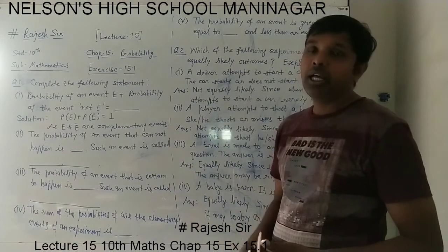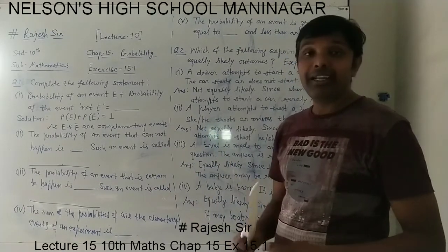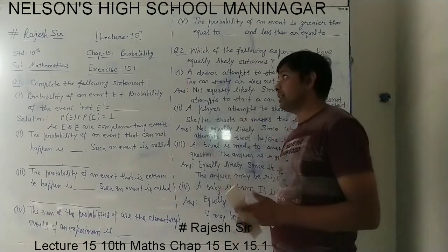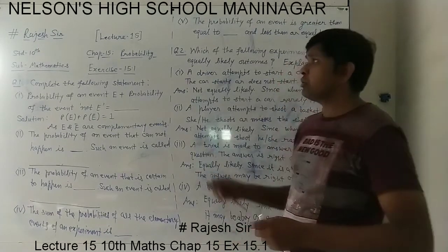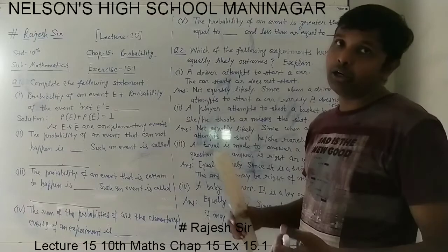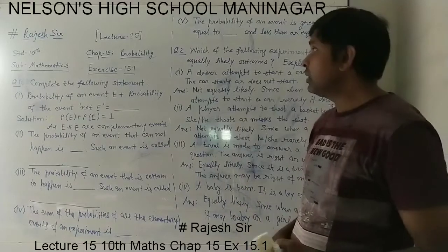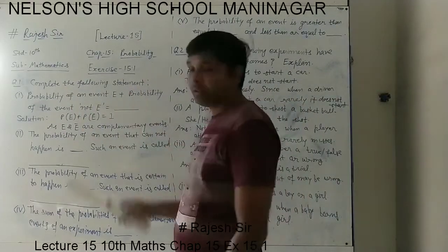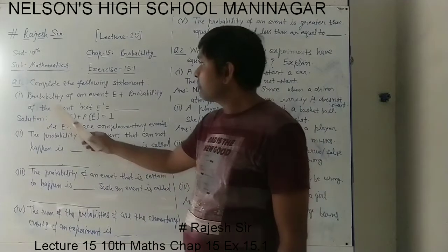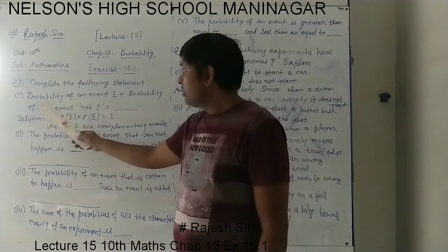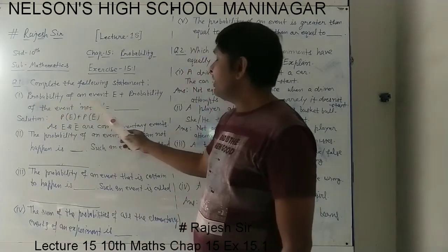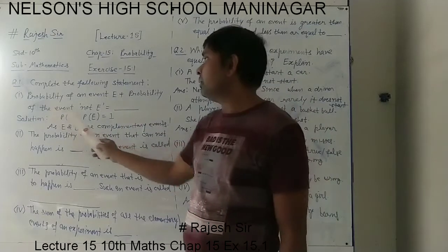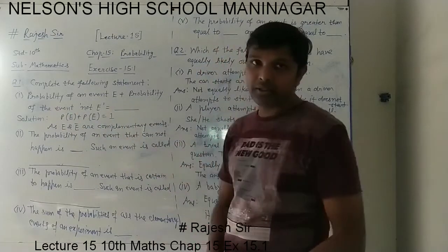You have to write it all. And by understanding well, you will also be able to solve this exercise. Question one is: complete the following statement. It is — probability of an event E plus probability of event not E equals to dash.